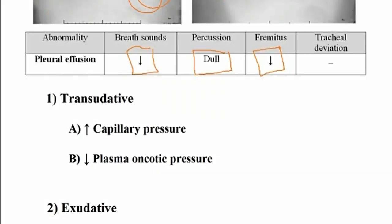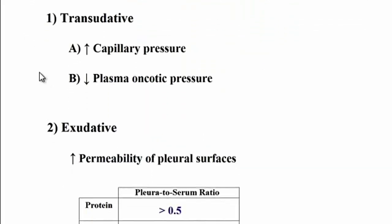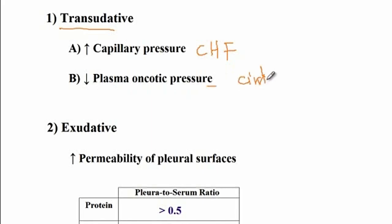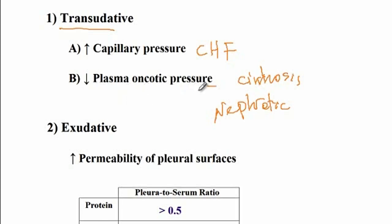There are two forms of pleural effusions. The first is transudative pleural effusion, from increased capillary pressure, such as in congestive heart failure where pulmonary hypertension causes fluid leakage. It can also result from decreased plasma oncotic pressure, as in cirrhosis where insufficient albumin is formed, or in nephrotic syndrome where protein is excreted in urine, resulting in decreased oncotic pressure and fluid leaking into the pleural space.